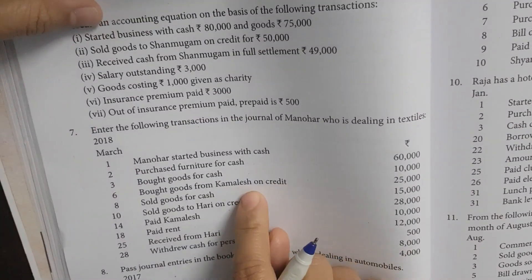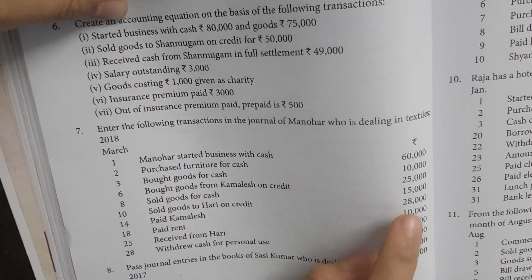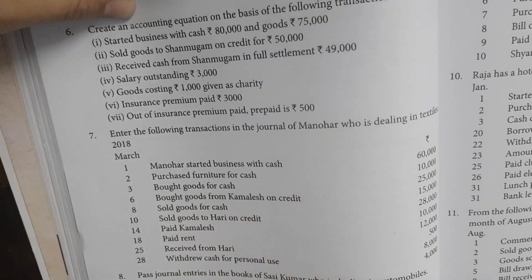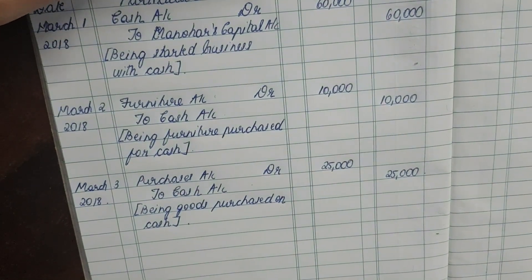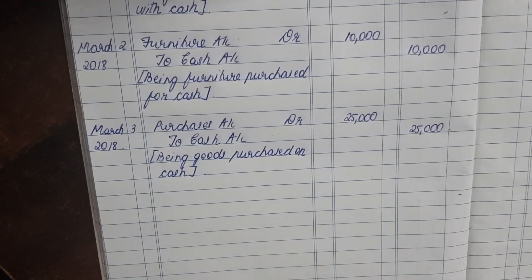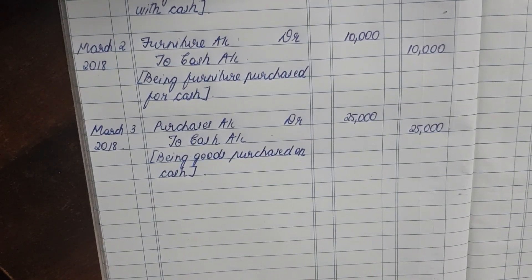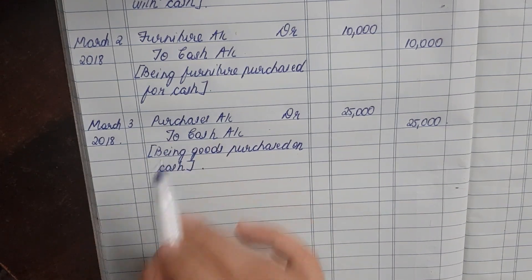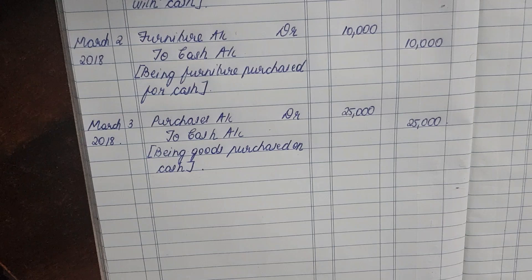Transaction 4: Bought goods from Kamalesh on credit ₹15,000. We purchased ₹15,000 worth of goods from Kamalesh but not for cash — it is on credit. When we purchase on credit, we are liable to pay them, so Kamalesh is our creditor. The date is March 6.